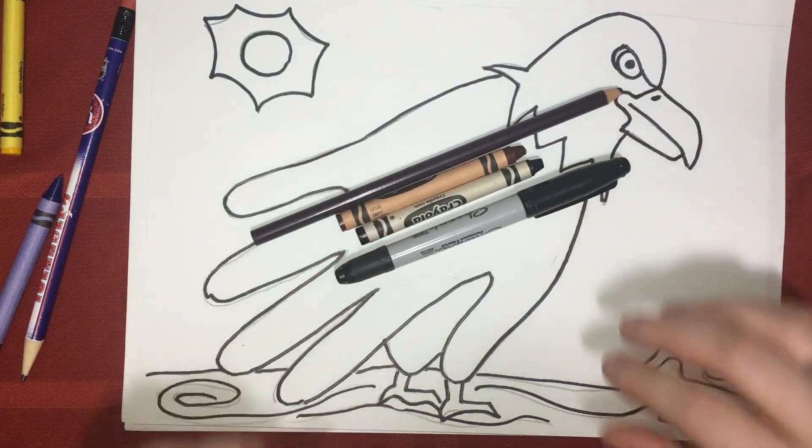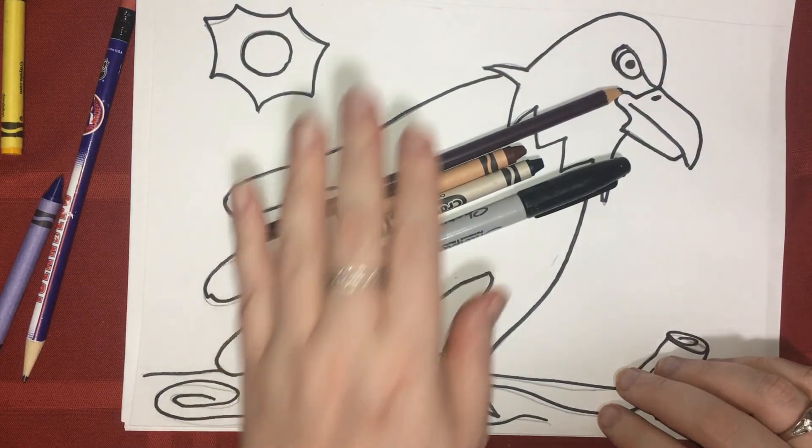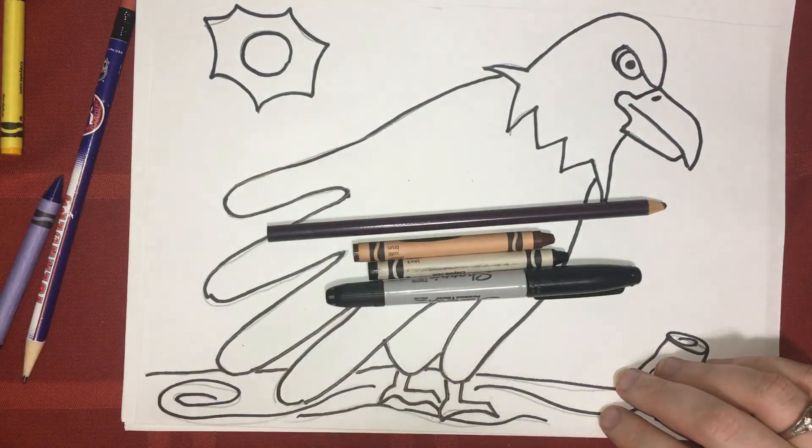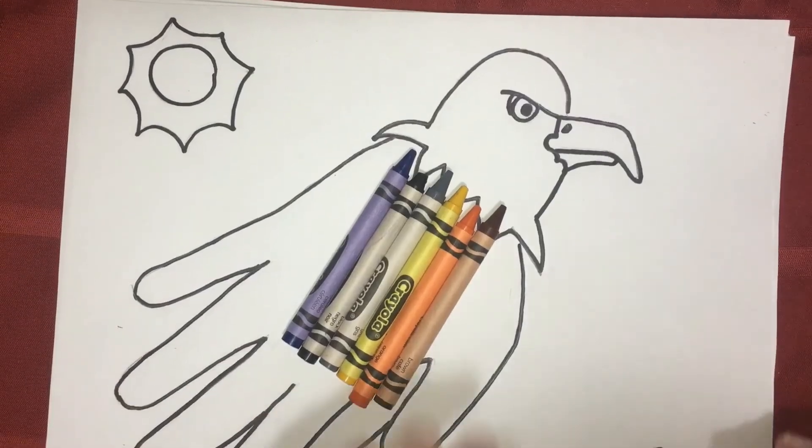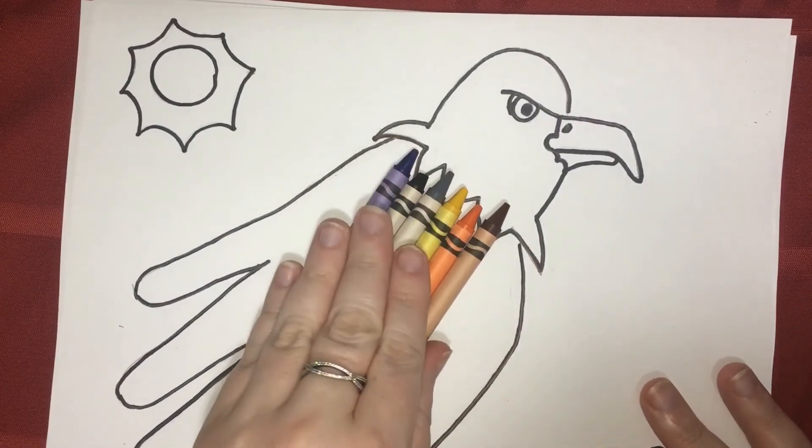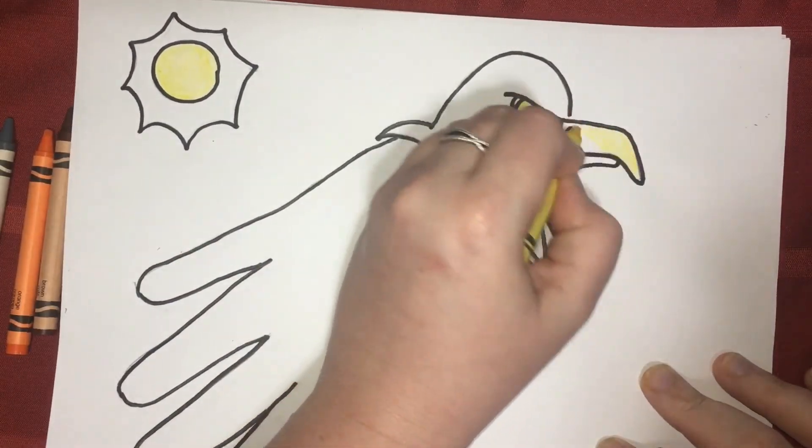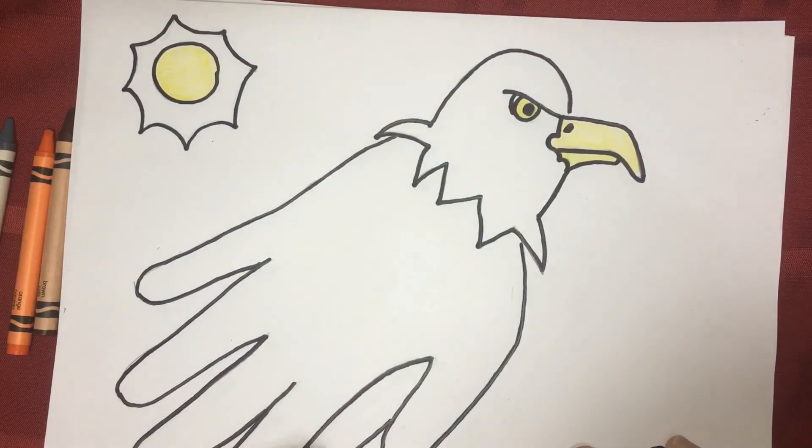Now it's time for us to begin coloring. You are going to want to gather any sort of coloring materials you may have at home. I use the colors blue, black, gray, yellow, orange, and brown. You can use any colors you want.